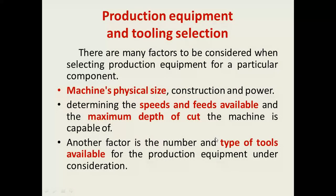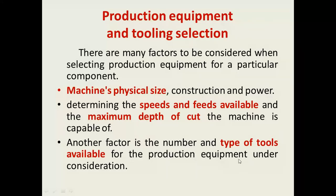The topic of this session is production equipment and tooling selection. There are many factors to be considered when selecting production equipment for a particular component. These include the machine's physical size, the speeds and feeds available, the maximum depth of cut the machine is capable of, and the number and type of tools available for the production equipment under consideration.